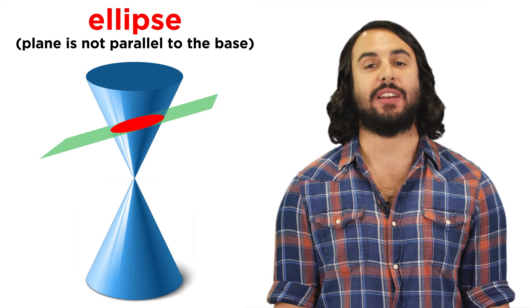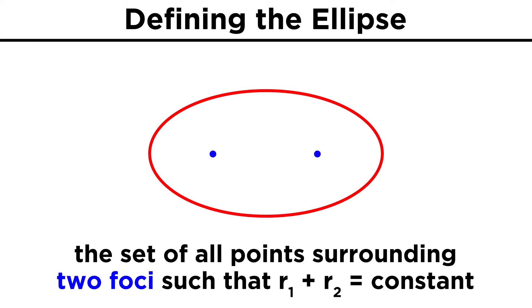So that's one way to define an ellipse. Another way is to say that an ellipse is the set of all points surrounding two foci, whereby the distance from a point to one focus plus the distance from that point to the other focus is constant.